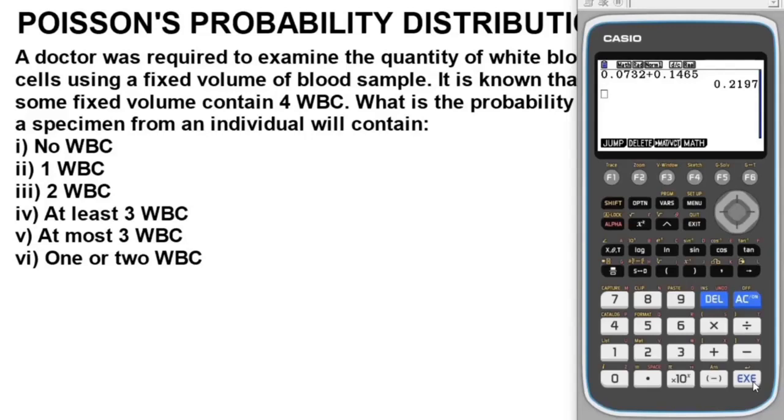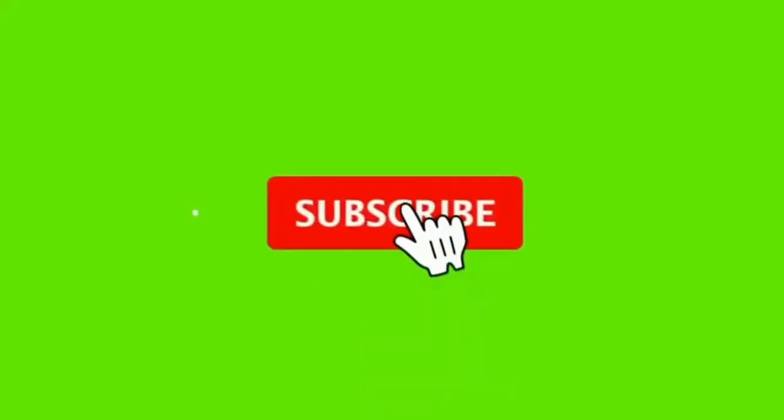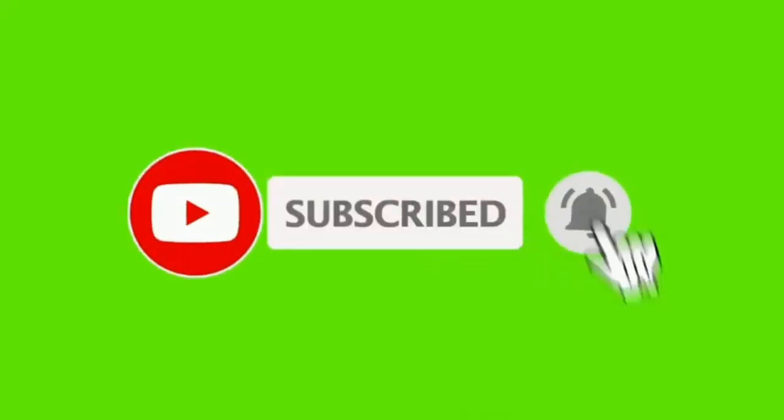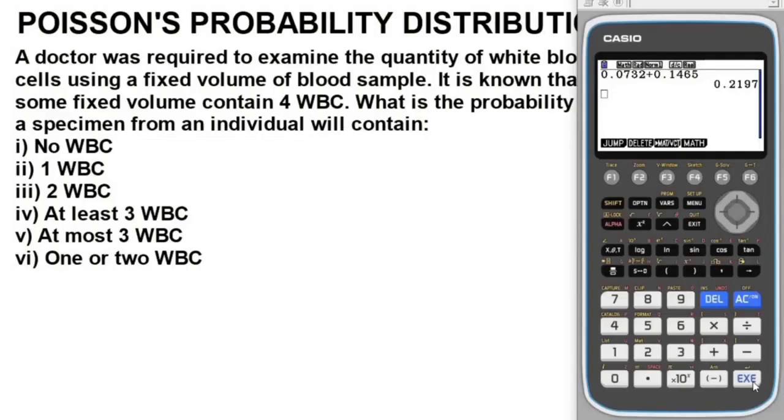This is basically how you can solve problems involving Poisson probability distribution using the CASIO fx-CG50 graphing calculator, especially for multiple choice questions. If you're new to this channel, ensure you subscribe now. Share and comment on this video.